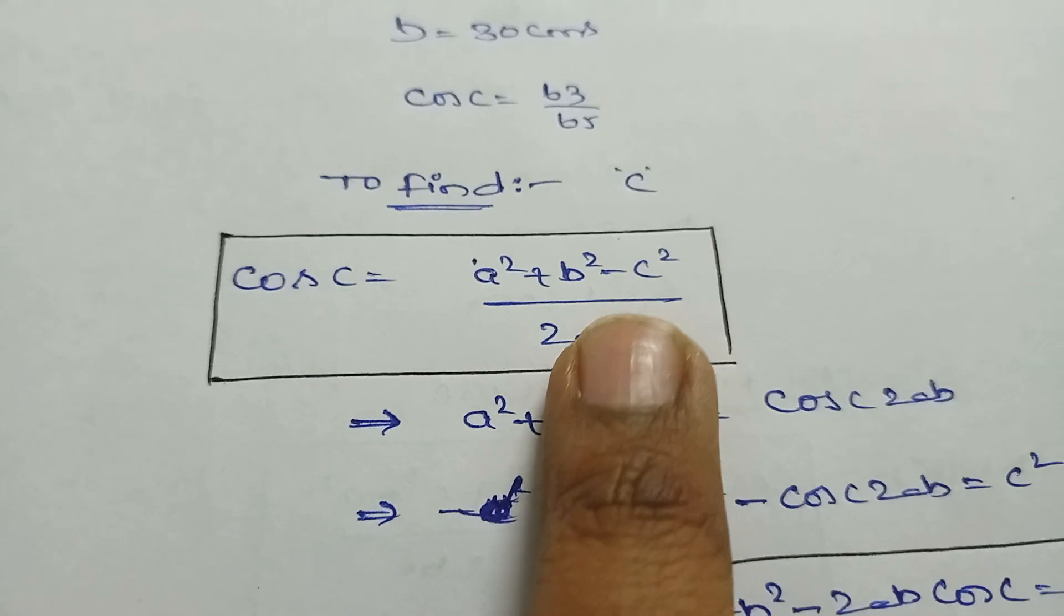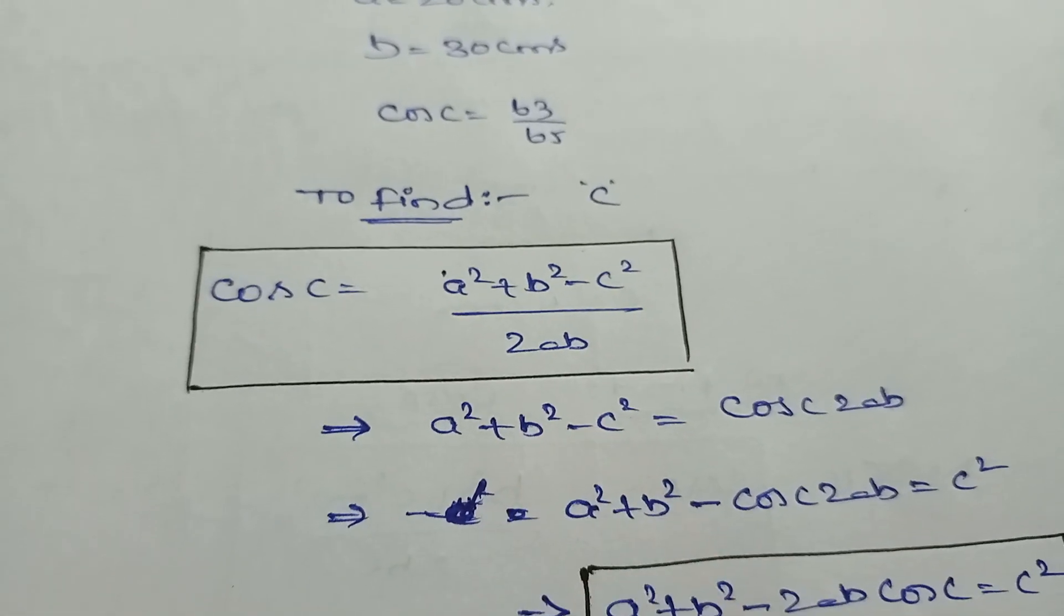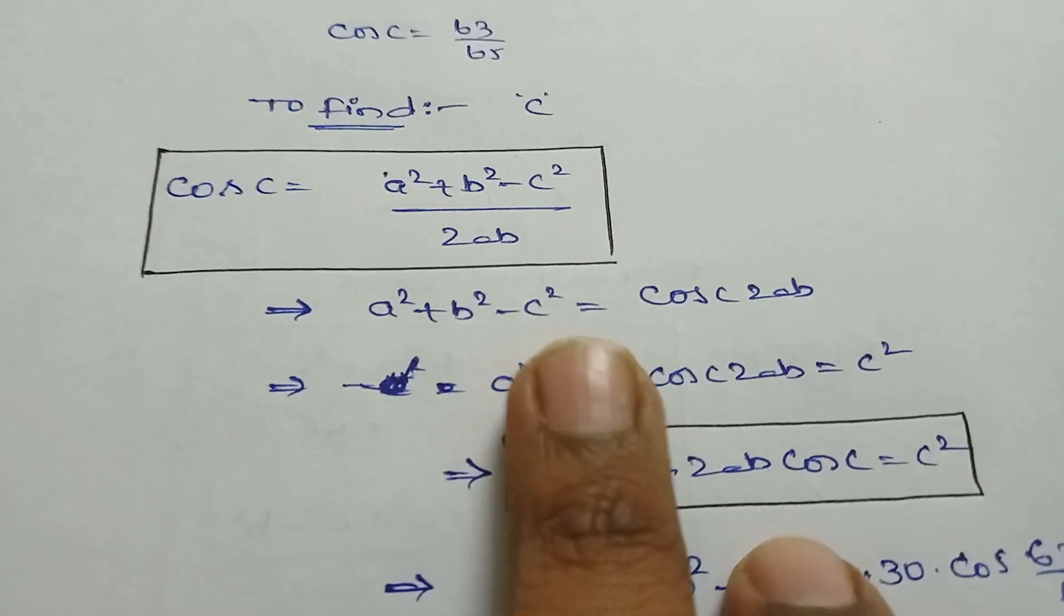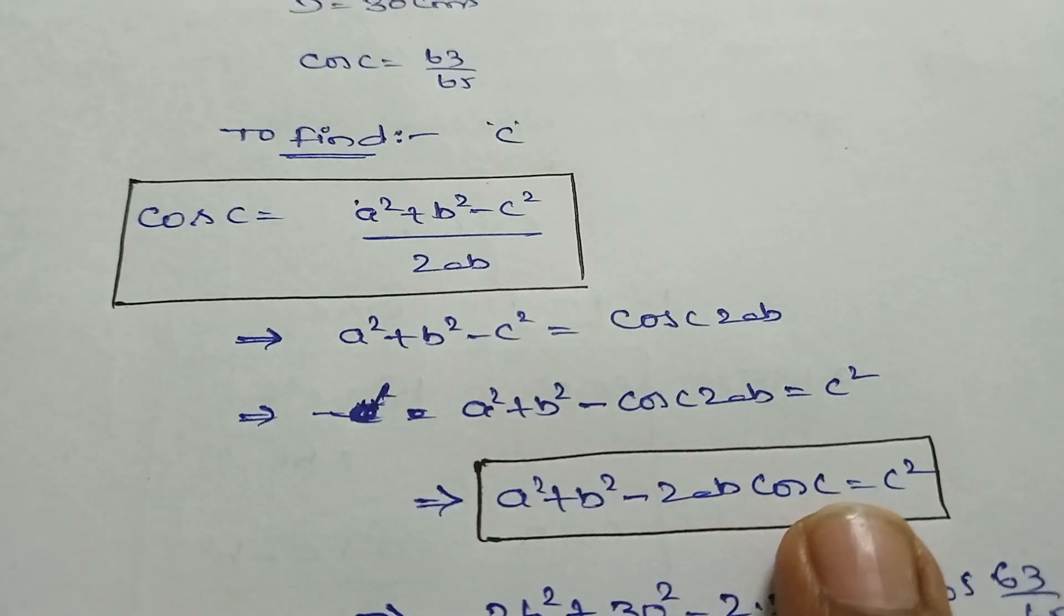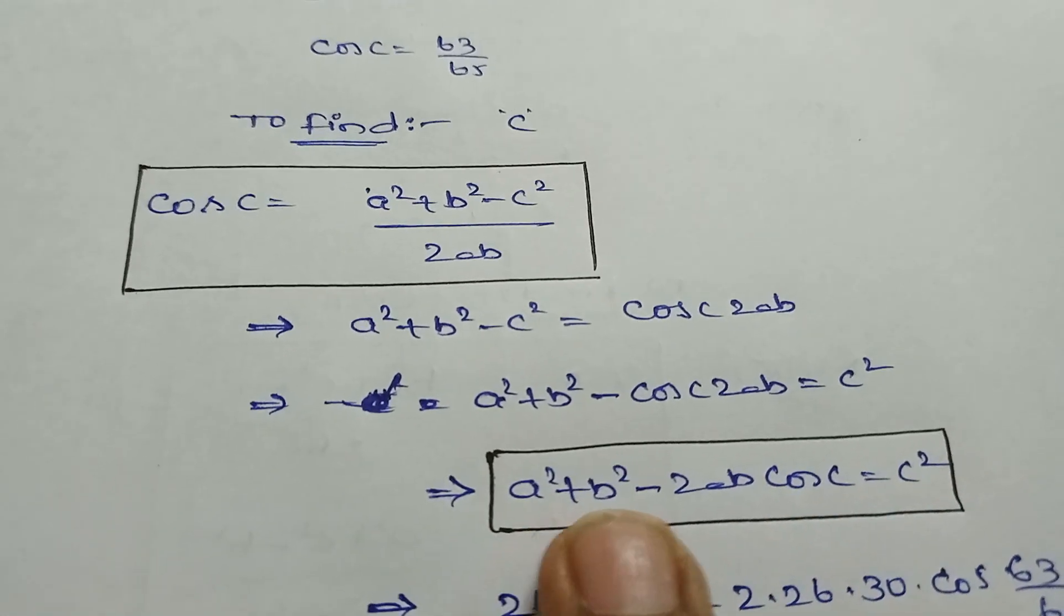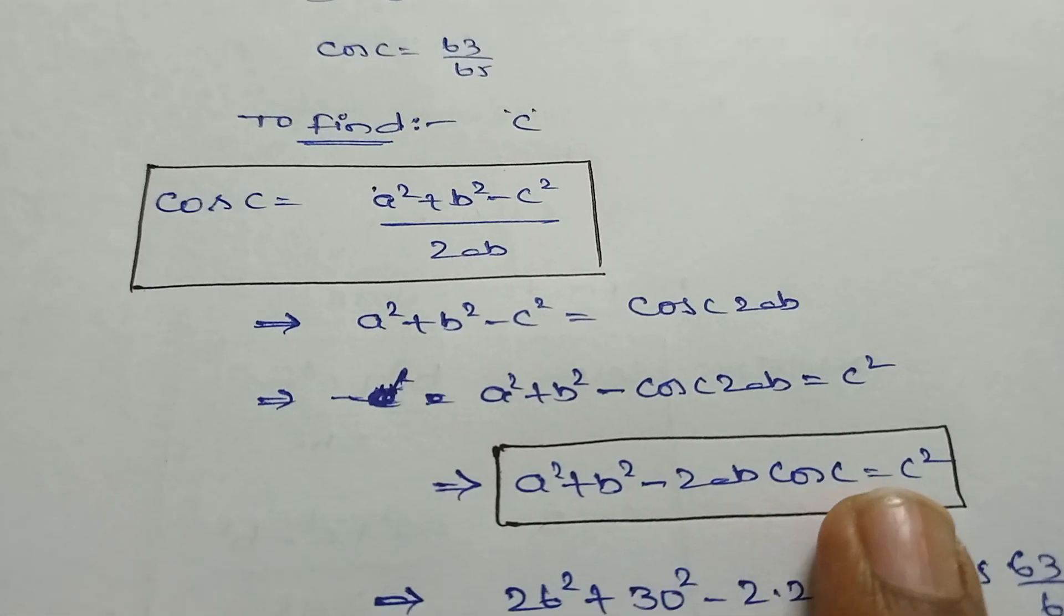So make c² as the subject. If you make c² as the subject, you will get like this: c² = a² + b² - 2ab cos C.